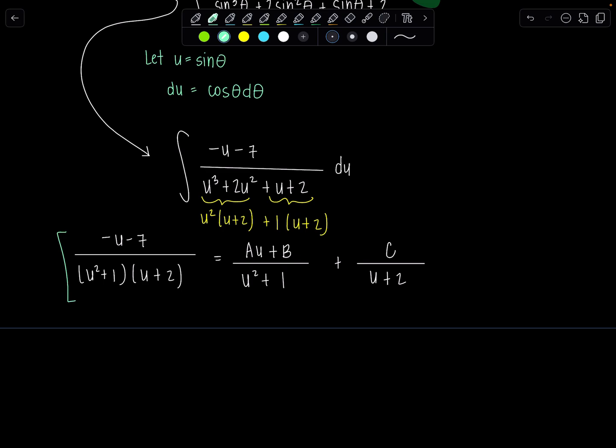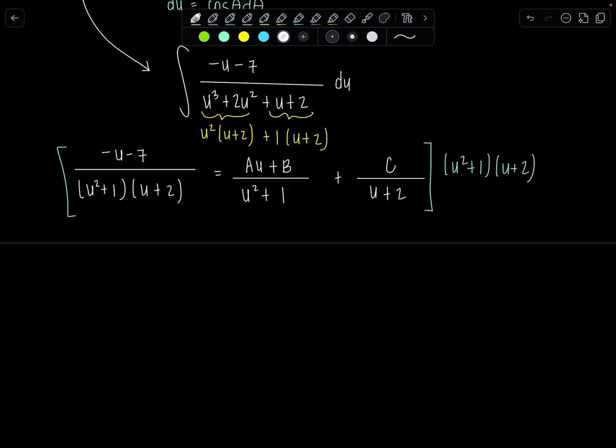Very good. Now we're going to multiply through by the LCD u squared plus 1 times u plus 2. And let's see what unfolds. So I've got negative u minus 7 equals a u plus b times u plus 2 plus c times u squared plus 1.